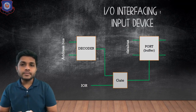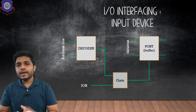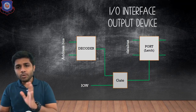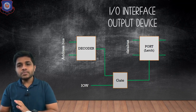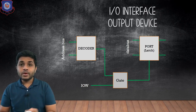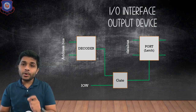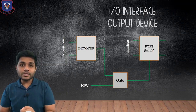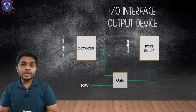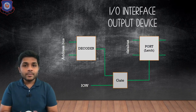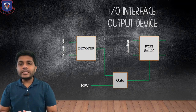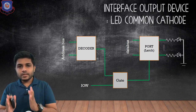On the other side of the buffer we connect some input device. Now let's see the block diagram of interfacing for an output device. The block diagram almost remains the same, but the only difference is that the port is changed. For the input device the port was buffer; for the output device the port is latch. The control signal also changes — for the input device the control signal was I/O read, but now the control signal is I/O write.